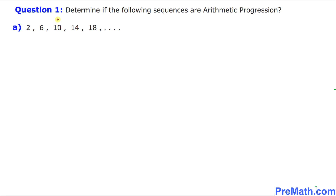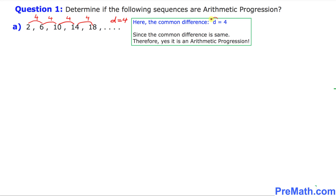Here is our very first question: we have to determine if the following sequence is an arithmetic progression. Part A — looking at the sequence, the difference between the first two terms is 4, the next two consecutive terms also differ by 4, and 4 again. So the common difference D equals 4, which is the same no matter which terms you look at. Since the common difference is constant, yes, this is indeed an arithmetic progression.